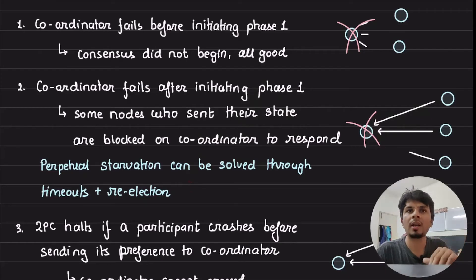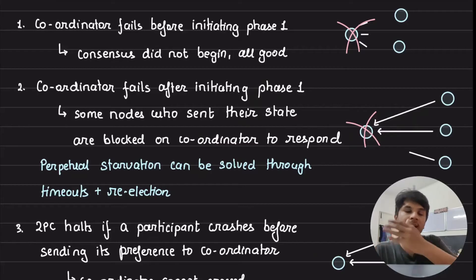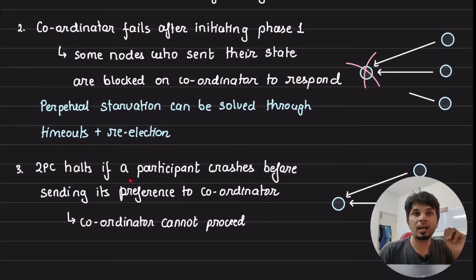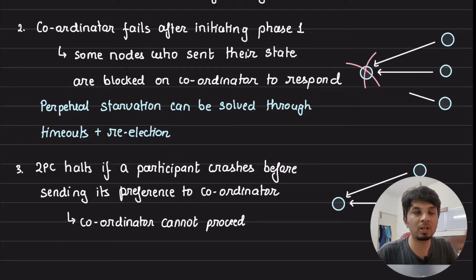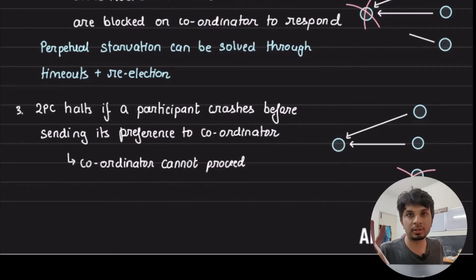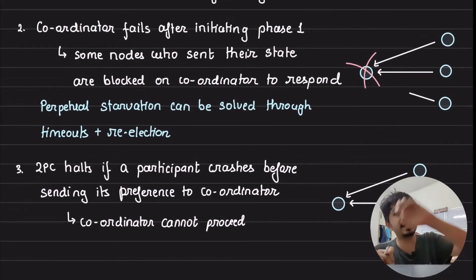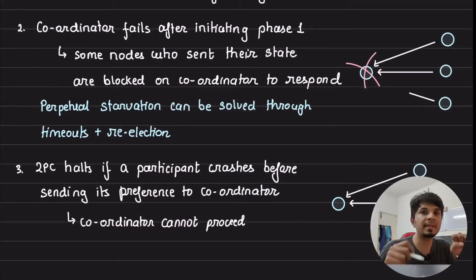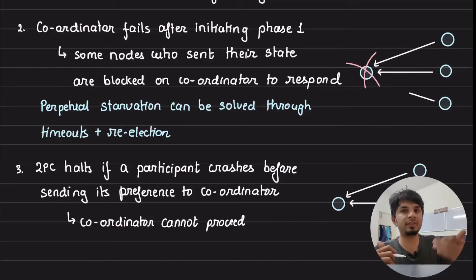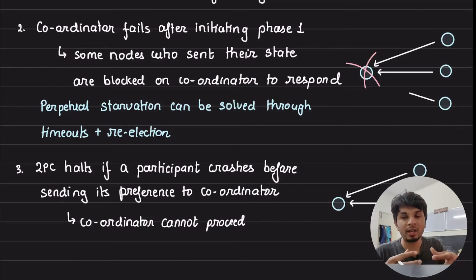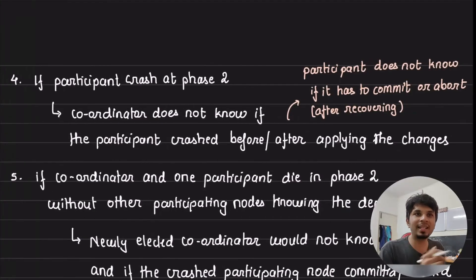Case 3: a participant crashes before sending its preference to the coordinator. Say B and C send their decisions to A, but D crashes. A is waiting for D's decision, and until A realizes D has crashed, the entire two-phase commit comes to a grinding halt. The coordinator cannot proceed until all nodes have sent their local decisions.